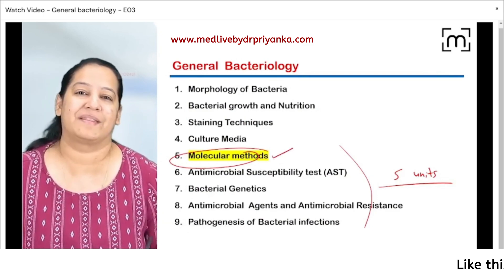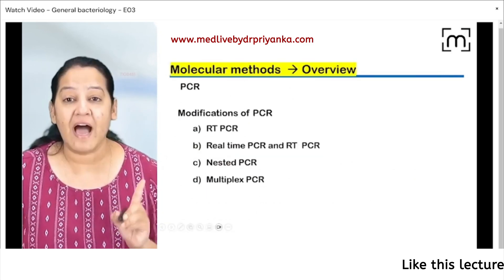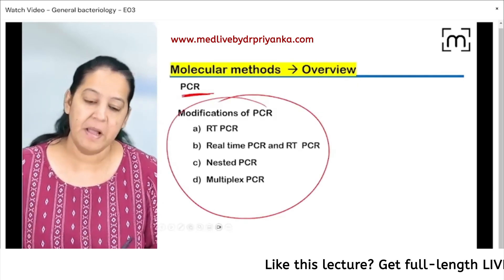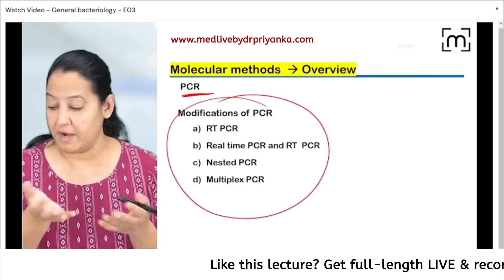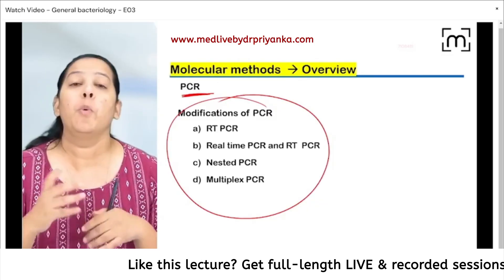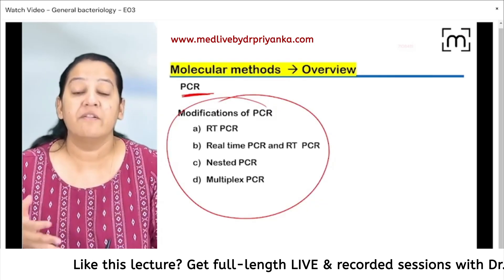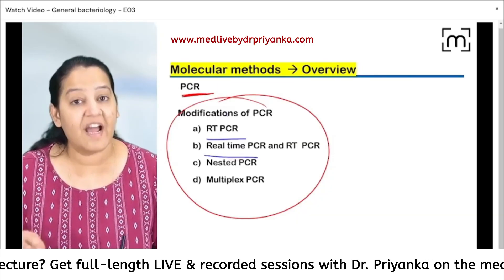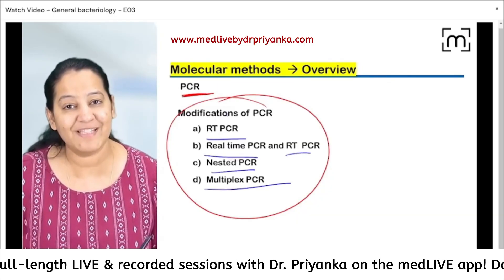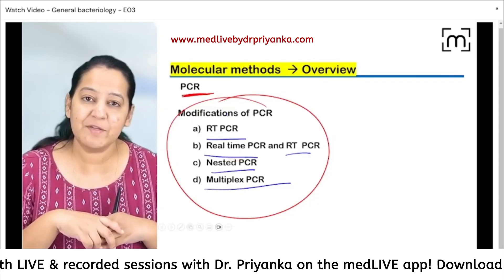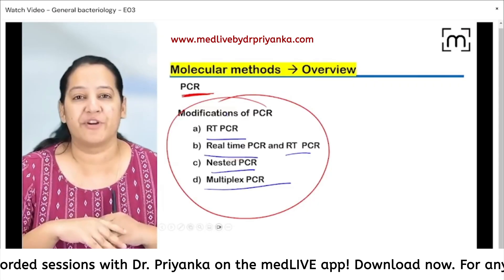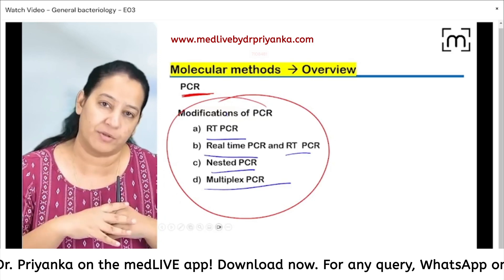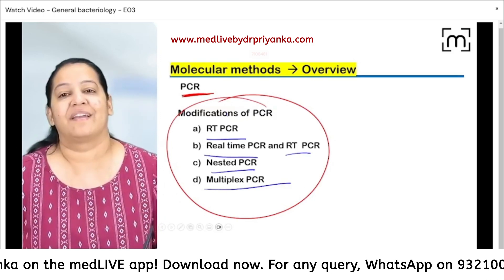Let's start with the first unit: molecular methods. In molecular methods, I want to teach you PCR and the modifications of PCR. Many students live here — how many of you know the differences between them? What is PCR and what are the variations of PCR? That is RT-PCR, real-time PCR, real-time RT-PCR, nested PCR, multiplex PCR. Do you understand the differences between them?